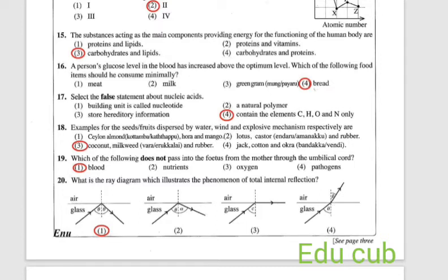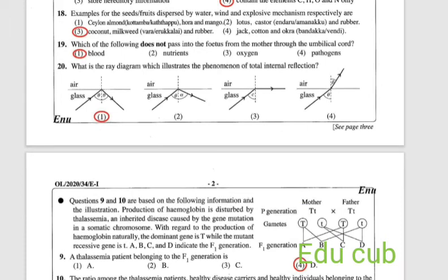Nineteenth one: which of the following does not pass into the fetus from mother through the umbilical cord? The blood is the answer, the first one. The blood is not passed through the umbilical cord to the baby. Nutrients, oxygen, pathogens, they all are passing through the umbilical cord.